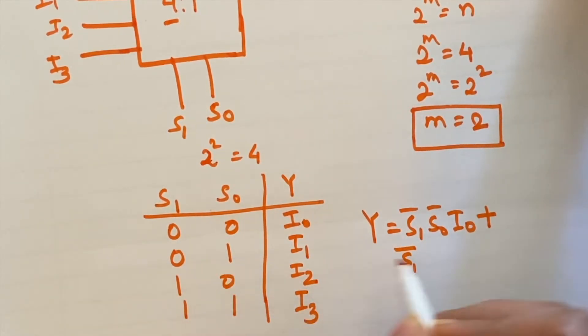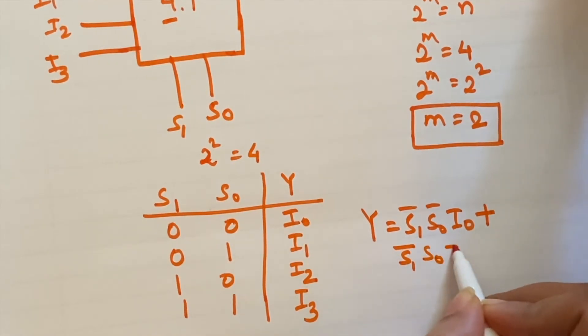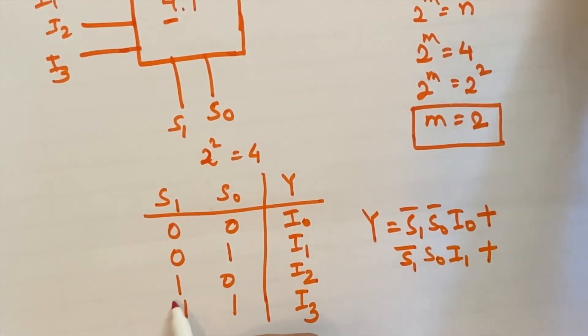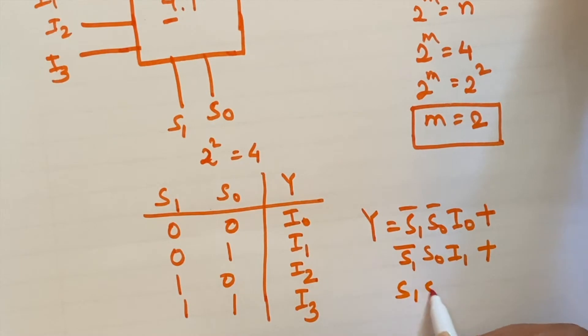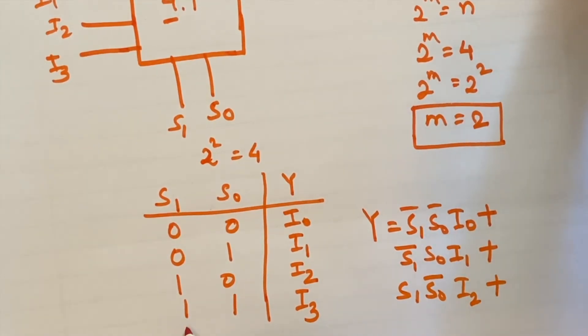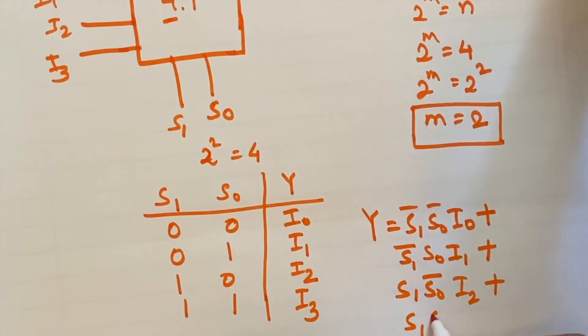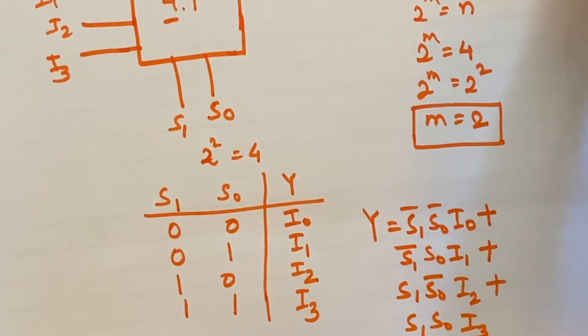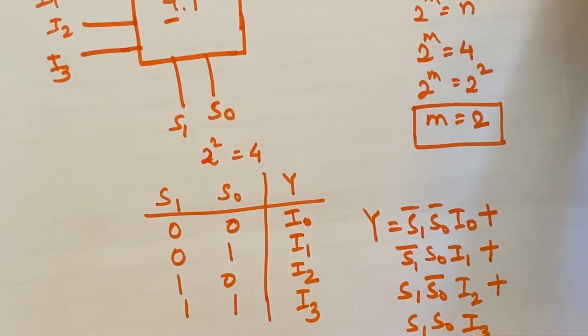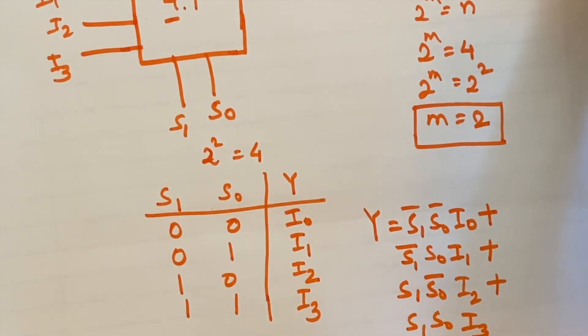s1 s0 bar i2 plus s1 s0 i3. So this is the expression for the Y, that is the output of 4 is to 1 MUX.